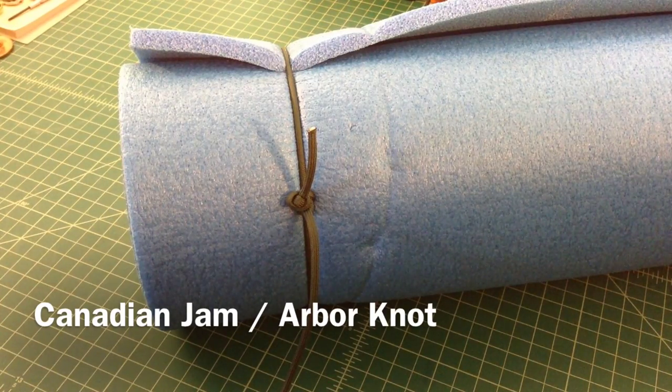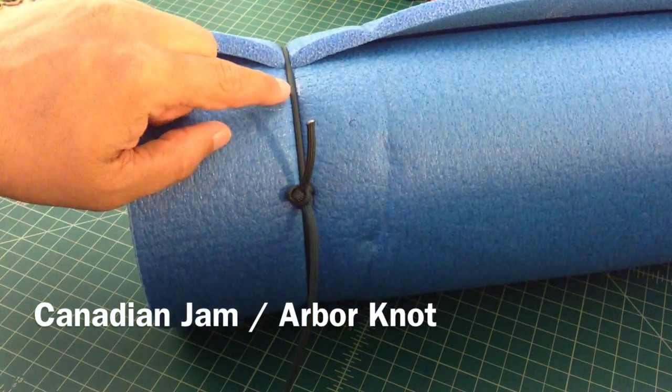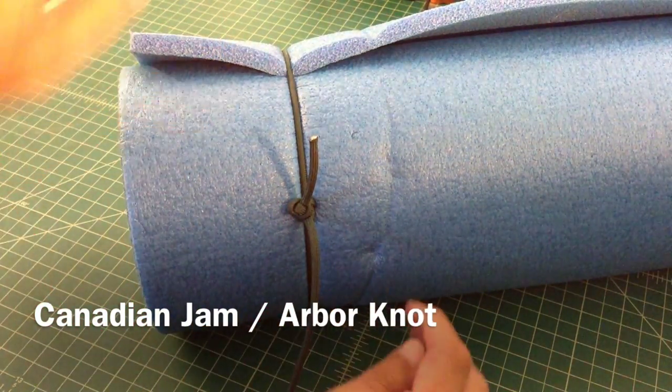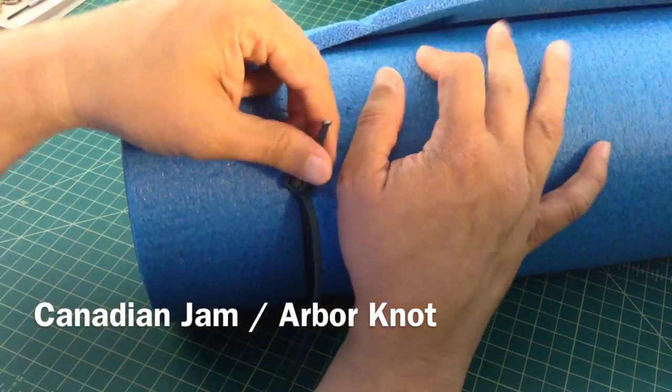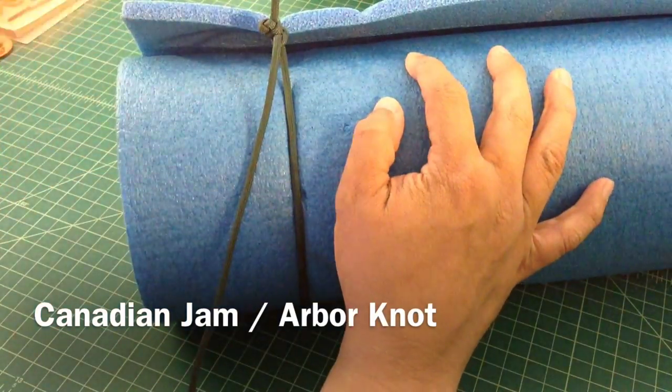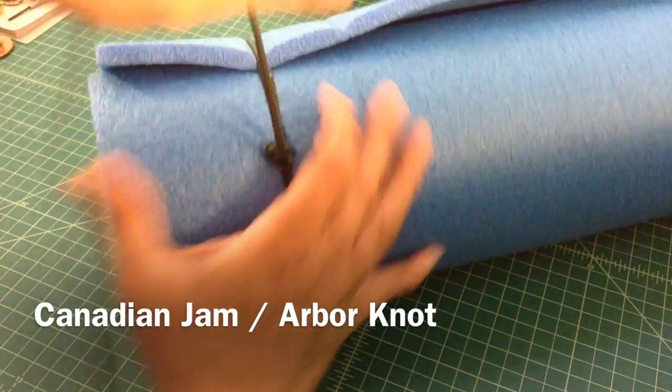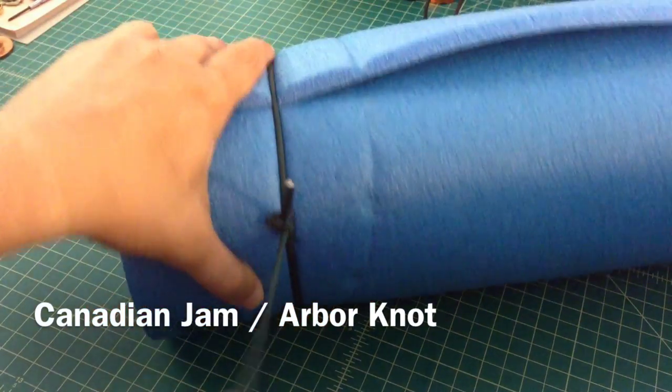And this knot tightens on itself and as you can see it can get very tight and works off of internal resistance to the loop. Now what's nice about this knot is it's very easy to loosen and then I can just come back in and tighten it right back up and it's not a problem.